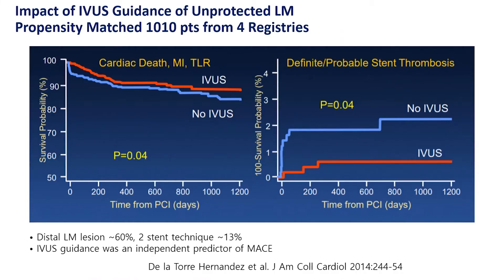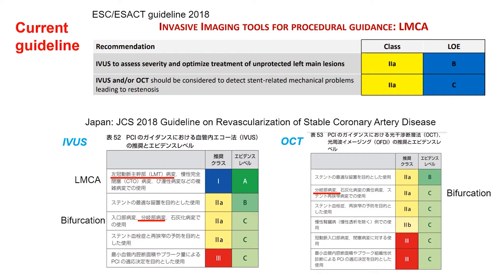In a pooled analysis of around 1,000 patients, IVUS guidance showed higher survival free from composite endpoints of cardiac death, MI, and target lesion revascularization. IVUS guidance is also effective in reducing stent thrombosis. According to this practical evidence, current guidelines for imaging guidance have been revised in the ESC guidelines: IVUS for left main, and IVUS and/or OCT for stent-related mechanical problems, are listed as Class 2A.